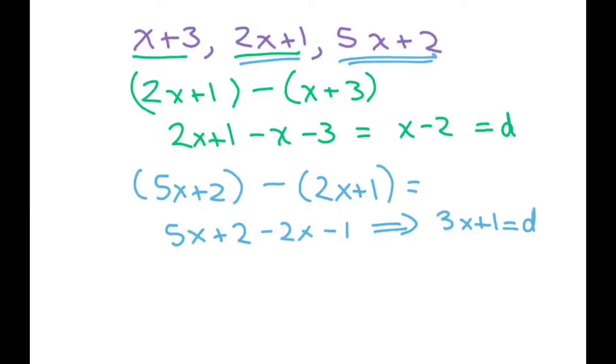Now we have our 2 d's. So we have a system of linear equations. Since I have 2 d's, I'm going to set them equal to each other, d equals d. So we have x minus 2 equals 3x plus 1.